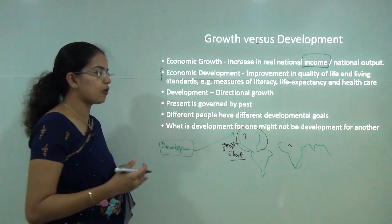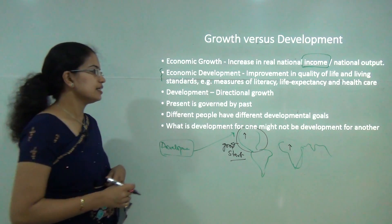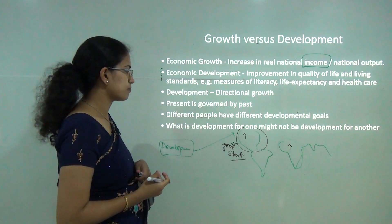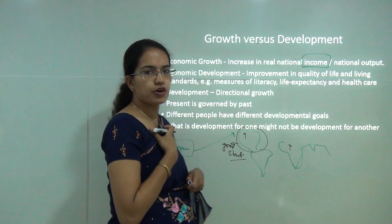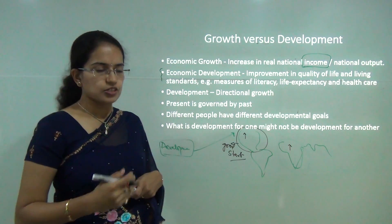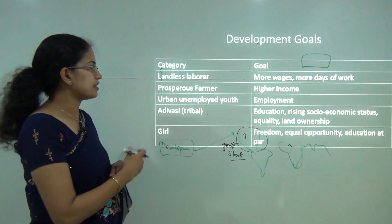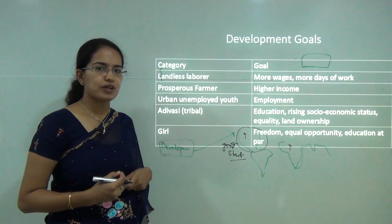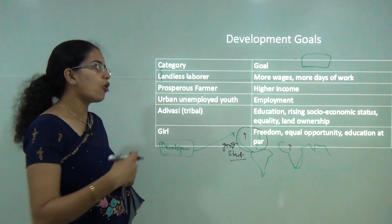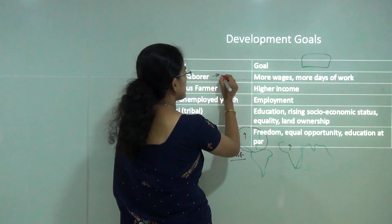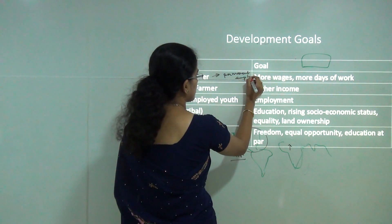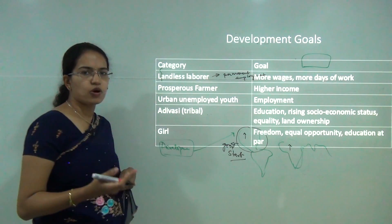For different people, there are different development goals. What is development for me might not be development for you. For example, for a landless laborer, development would be earning more wages, getting more days of work, or at a higher level, getting permanent employment. That is development from the perspective of a landless laborer.